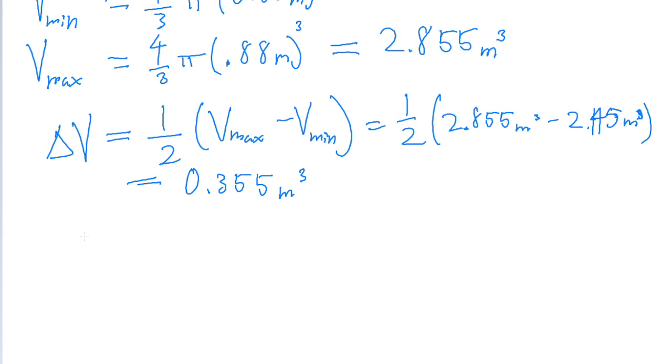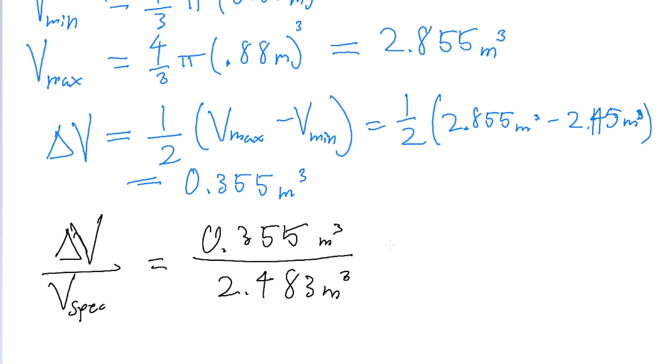To find the percent uncertainty, we just take the uncertainty and divide it by the specified volume. That's 0.355 cubic meters divided by the specified volume we calculated earlier, 2.483. And when we're calculating percentages, we also have to multiply the whole thing by 100. If we do that and put it into our calculator, then we find an answer of about 14%. So 14% is the answer to this problem.